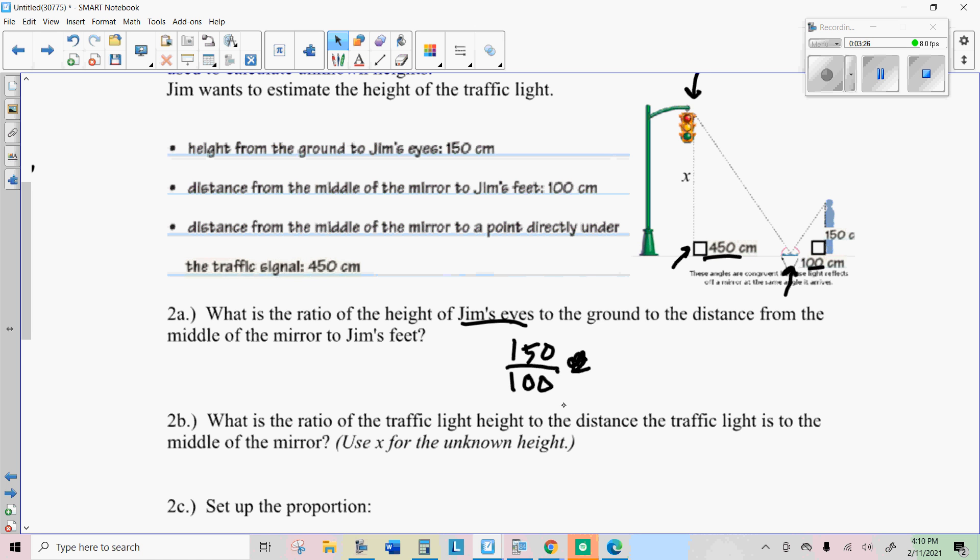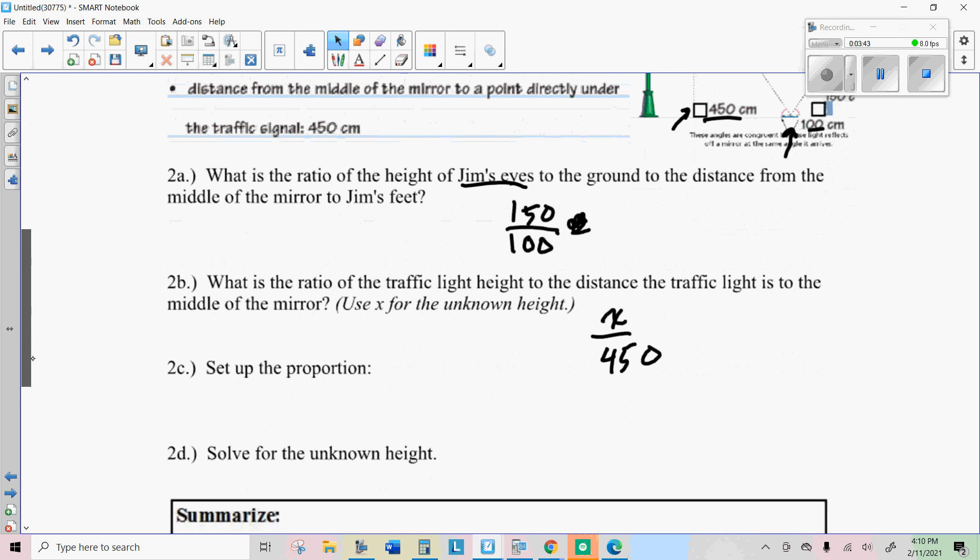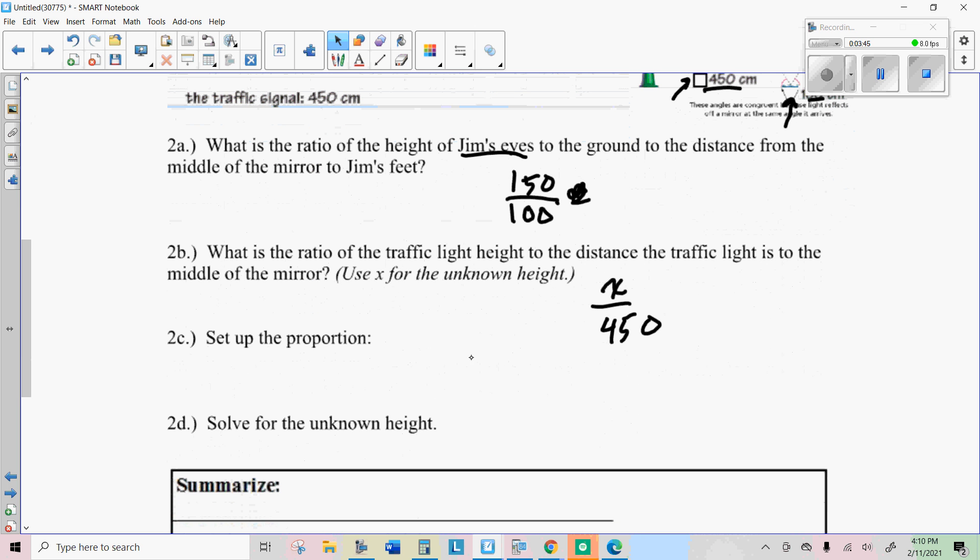And then we're going to also create the ratio of the traffic light height, which we're going to use X for that, to the distance from the light to the mirror along the ground, which is four fifty. And so since these two ratios should be equal because they're similar, we're going to set up the proportion and find the unknown height, which is X.